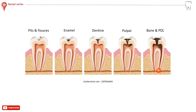Progression of fissure caries is usually rapid due to the morphology of the area. Rapid progression is especially common in the first molars, with progress from early dentine involvement to pulp involvement in less than one year in some cases. And if left untreated, it involves bone and PDL.